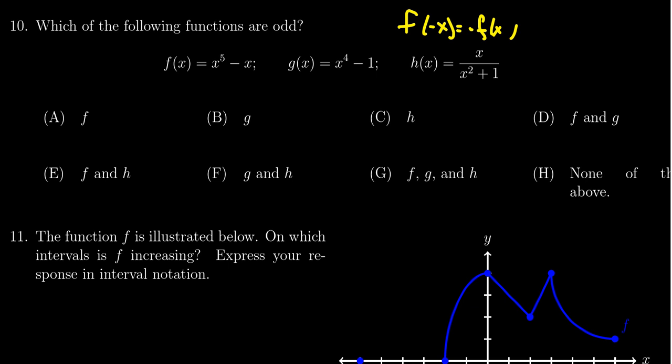Now for polynomials you can actually detect even and odd functions pretty quickly. If a polynomial function has only odd powers like five and one that necessarily makes it odd, but we can check that algebraically as well.